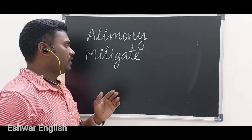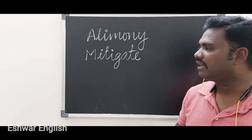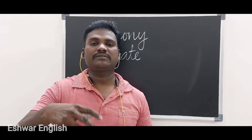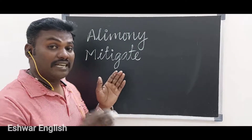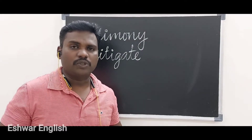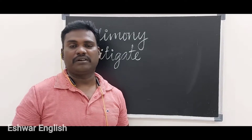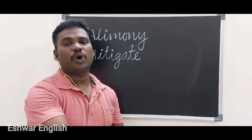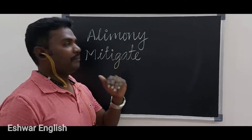The second word is 'mitigate.' What is meant by mitigate? Mitigate means to make less severe. For example: 'That medicine mitigated the pain.' Also: 'I am mitigating his anger.' Mitigate is a verb, and alimony is a noun.